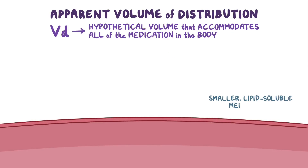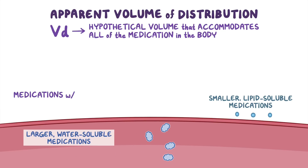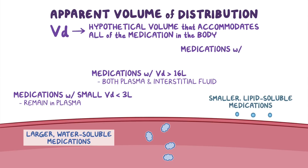Smaller, lipid-soluble medications can cross cell membranes easily, so they get distributed in extravascular body tissues, organs, and fat cells, while medications that are larger and water-soluble stay mostly in the plasma. Medications with a VD of 3 liters or less remain mainly in the plasma. Medications with a VD of 16 liters or more get distributed throughout the extracellular fluid, meaning both the plasma and interstitial fluid compartments. And medications with a VD of 46 liters or more are possibly distributed throughout all body compartments.